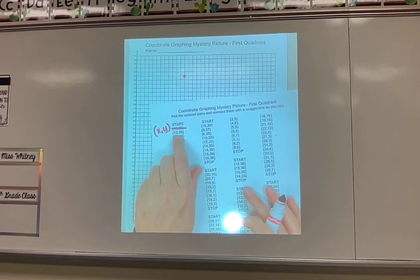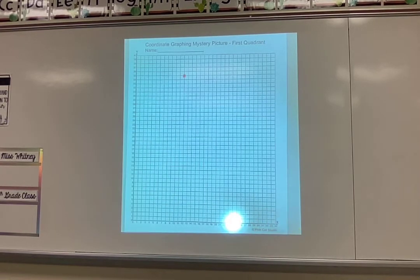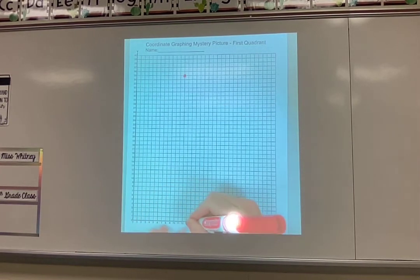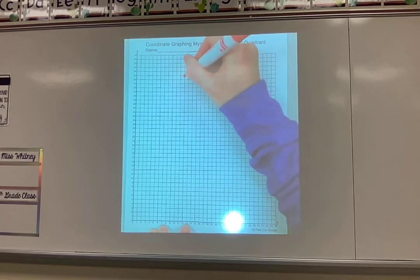Then I'm going to do the next one 13, 35. So I remember my X comes first so I'm going to go across to 13 and up to 35. So that would be right there.